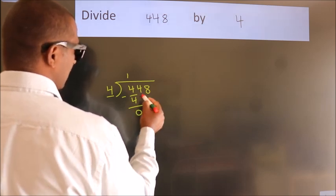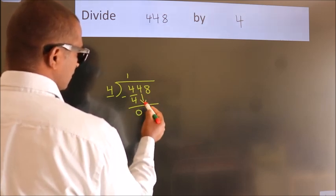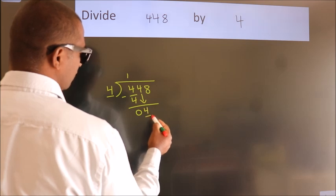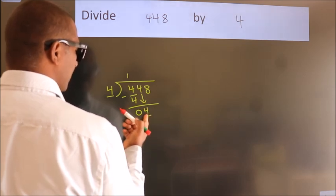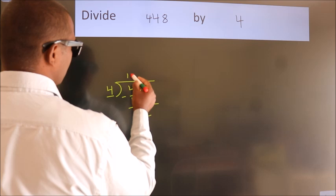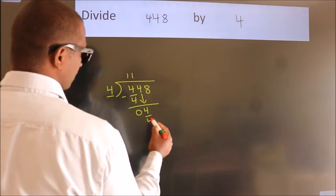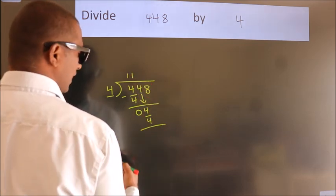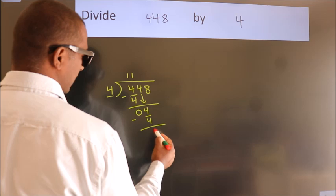After this, bring down the beside number. So 4 down, so 4. When do we get 4? In 4 table. 4 once, 4. Now we subtract, we get 0.